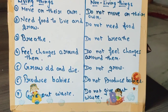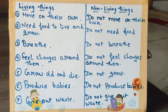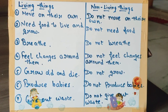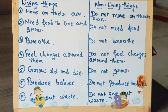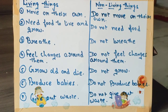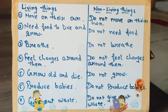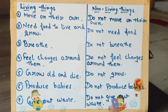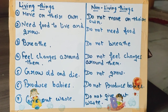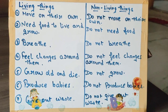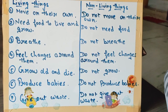Next point: living things produce babies. Living things have the characteristic of reproduction — they produce babies by laying eggs or by giving birth. Non-living things do not produce babies.